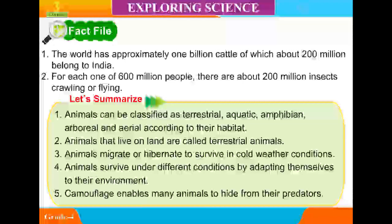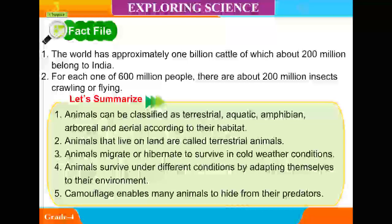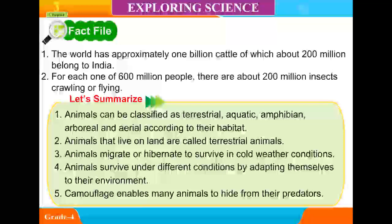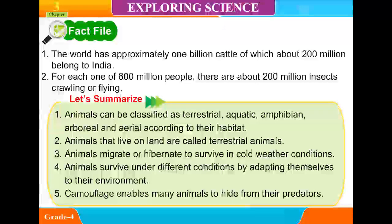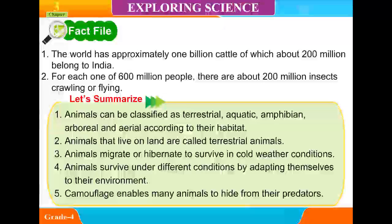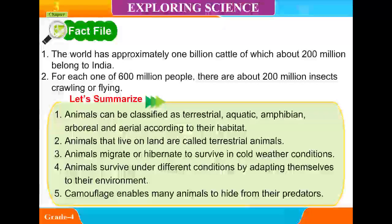Let's summarize. 1. Animals can be classified as terrestrial, aquatic, amphibian, arboreal, and aerial according to their habitat. 2. Animals that live on land are called terrestrial animals. 3. Animals migrate or hibernate to survive in cold weather conditions. 4. Animals survive under different conditions by adapting themselves to their environment. 5. Camouflage enables many animals to hide from their predators.